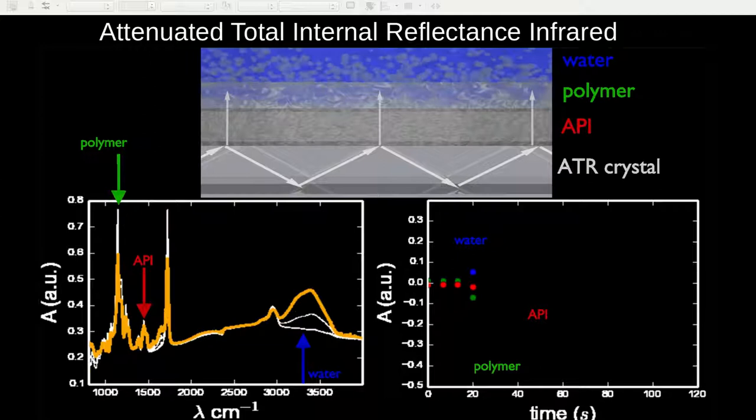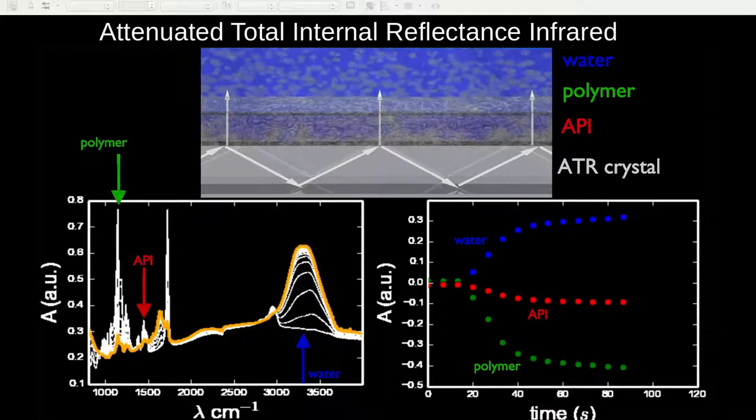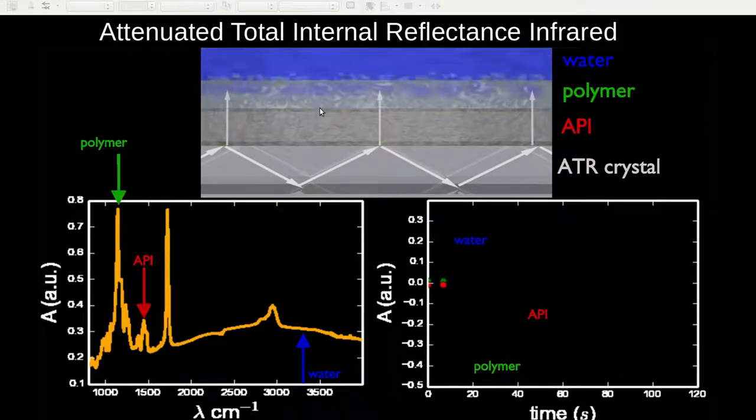To do this, we used a technique called attenuated total internal reflectance. In this case, we were using infrared spectroscopy. The cartoon at the top of the page shows an example of what this measurement may look like.